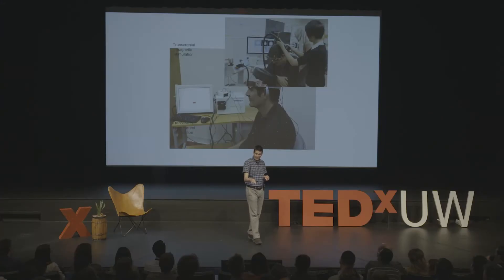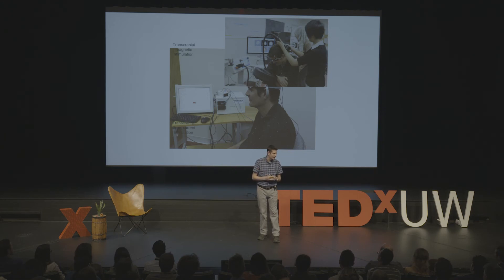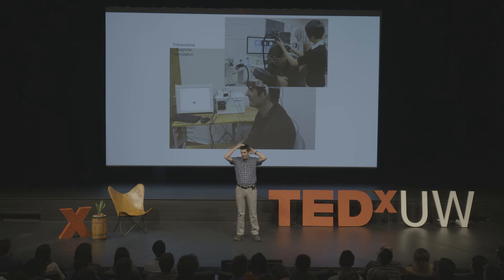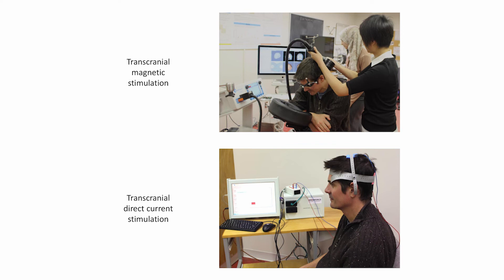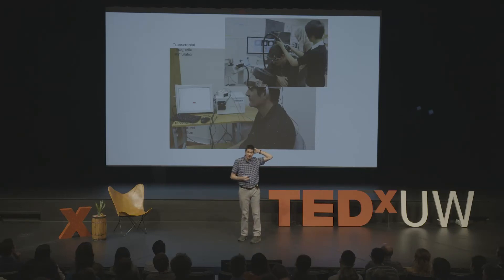The second technique is transcranial direct current stimulation. The principle is very similar, but rather than magnetism, two electrodes are placed on the head and a weak electrical current is run between them. The electrical current interacts with the brain areas underneath the electrodes and has similar effects — the stimulated brain area becomes more active and the neurochemical environment can be changed to temporarily make that brain area more changeable. In the image of me here you can see an electrode positioned at the back of my head over the visual areas.